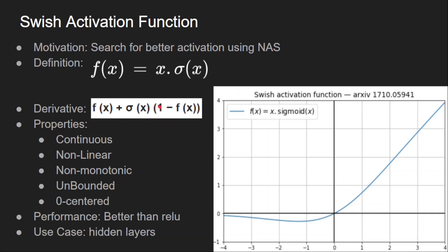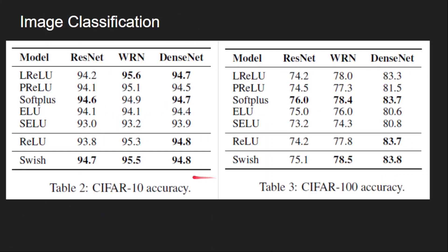SWISH is the activation function designed by an algorithm — Neural Architecture Search (NAS), developed by Google Brain for discovering the best network architectures for any use case. The same was used here for discovering the best activation function, and it came up with x * sigmoid(x). The function is continuous so the derivative exists at all points. It is non-linear and non-monotonic because the curve has both positive and negative slopes. It is unbounded on the positive side, bounded on the negative side, and is zero-centred as it has negative values. It outperformed all other activations including ReLU across different tasks and is the preferred activation function over ReLU.